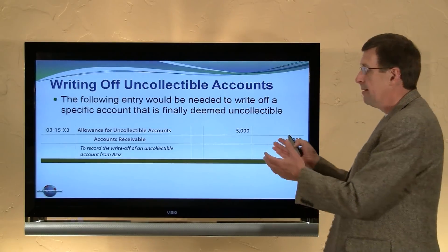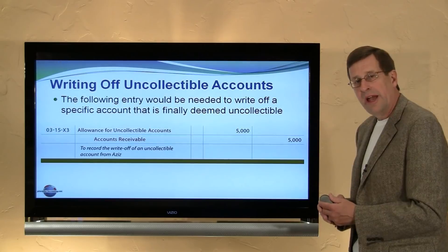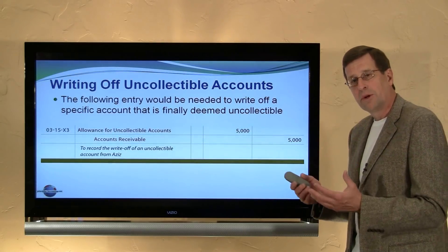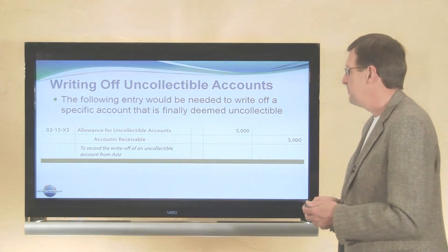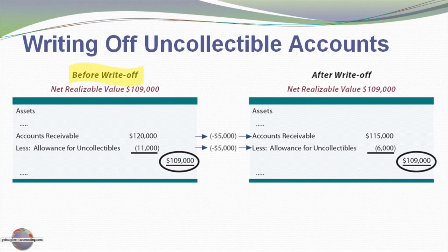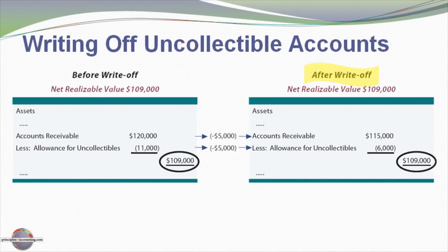What effect does writing off an account have on income? The answer is none. Neither of those accounts — the allowance nor accounts receivable — are income statement accounts. The allowance is a contra account to accounts receivable, a balance sheet amount, and accounts receivable is of course a balance sheet account. They offset one another, so this entry has no effect on income. Remember, the expense was recorded when we set up the allowance. Consider the balance sheet before the write-off: we had a net realizable value of $109,000 for the receivables — accounts receivable of $120,000 less an allowance of $11,000. After the write-off, deducting $5,000 from both accounts receivable and the allowance account, we still have $109,000 in net accounts receivable — $115,000 gross less a $6,000 allowance. So the write-off really has no effect on our net values on the balance sheet either. It's a non-event from an accounting context because the effect of the bad debt was captured when the allowance account was established concurrent with the sale recording.